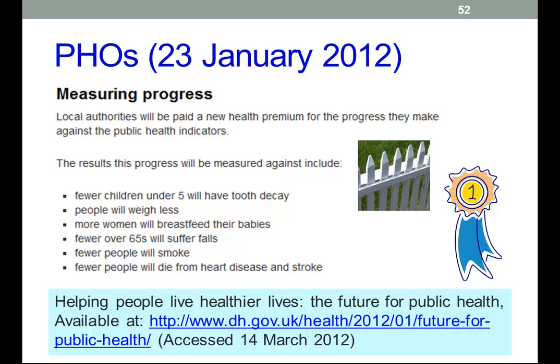This health premium will be paid for progress made against the public health indicators that we've been talking about. A range of them, including fewer children under 5 having tooth decay — which is an indication not just of tooth decay but of better diet, fewer extraneous sugars — and a range of other indicators. There's a link to a lot more information if you're interested.